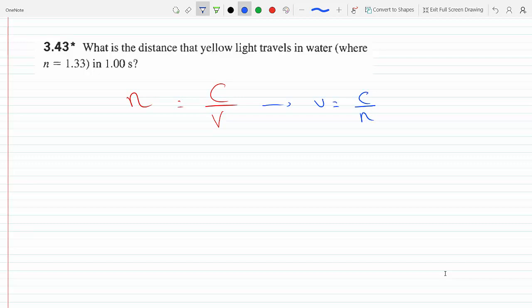And we know if we want the distance, the distance traveled will be the velocity times the time. So if we're going for one second, then it's C over n, the velocity of the beam of light, which is C over n times the time.